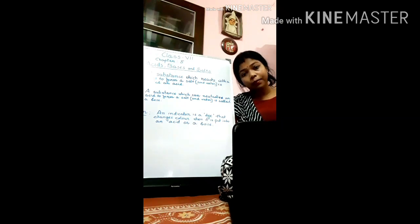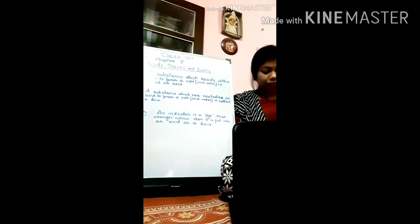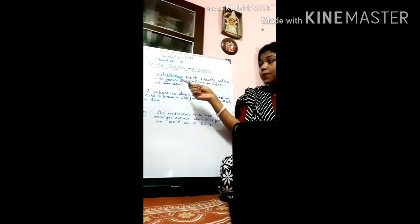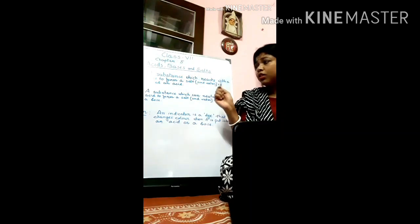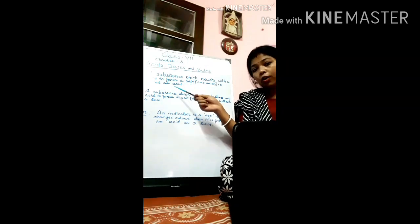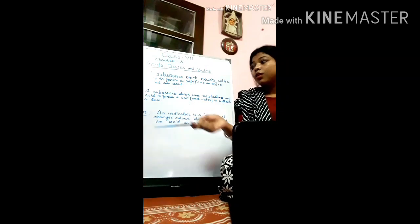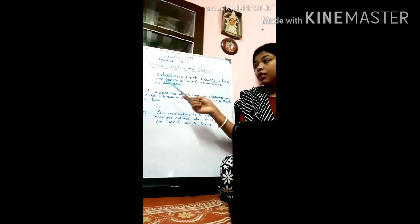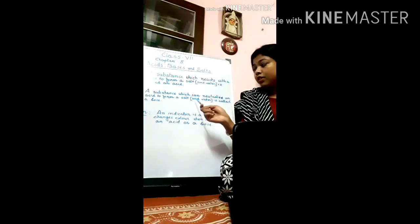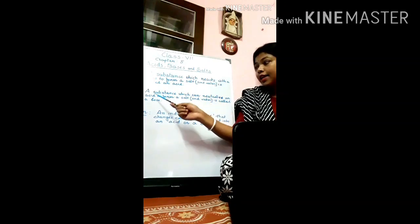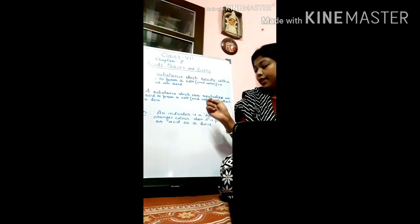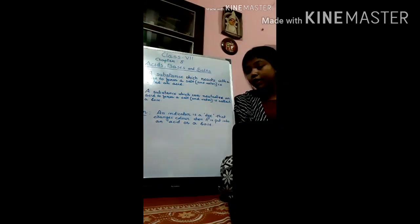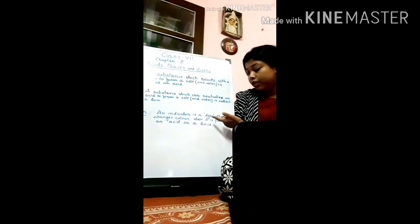What is an acid? A substance which reacts with a base to form a salt is called an acid. What is a base? A substance which can neutralize an acid to form a salt is called a base. And what is an indicator? An indicator is a dye that changes color when put into an acid or a base.